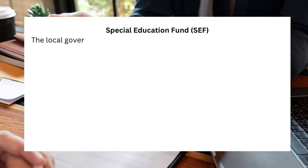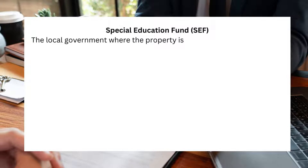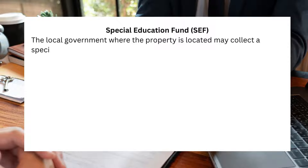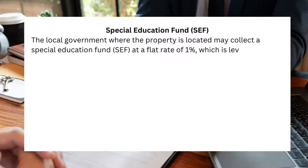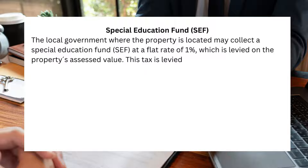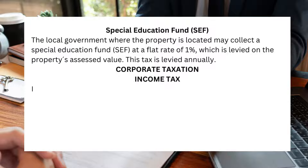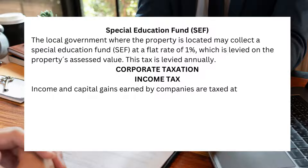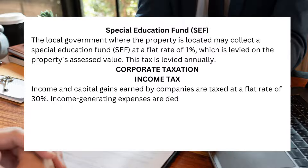The local government where the property is located may collect a Special Education Fund (SEF) at a flat rate of 1%, which is levied on the property's assessed value. This tax is levied annually. Regarding corporate taxation, income and capital gains earned by companies are taxed at a flat rate of 30%. Income-generating expenses are deductible when calculating taxable income.